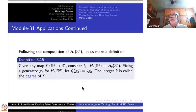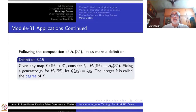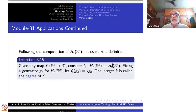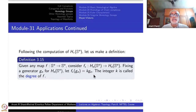Following the computation of the homology groups of the spheres and some specific generators in H_N of S^N for each N, let us make a little more computation with one definition first. Take any continuous function from S^N to S^N. Look at the induced map F* from H_N(S^N) to H_N(S^N). We know that both are infinite cyclic groups. Fixing a generator G_N for this infinite cyclic group, F*(G_N) will be some integer times G_N. This integer K is called the degree of F.